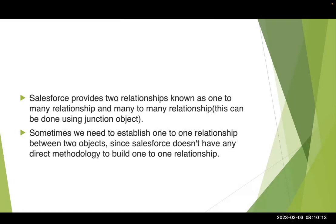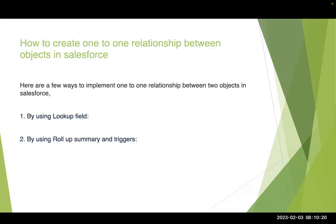If you want to establish a one-to-one relationship between two objects, we don't have a direct methodology in Salesforce. For that we must implement some methods: first by using a lookup field, next by using a roll-up summary, and by using triggers.